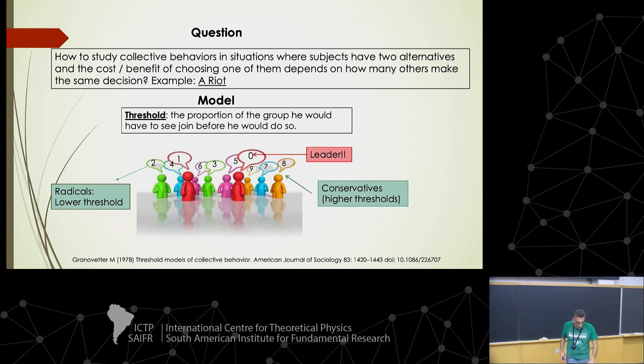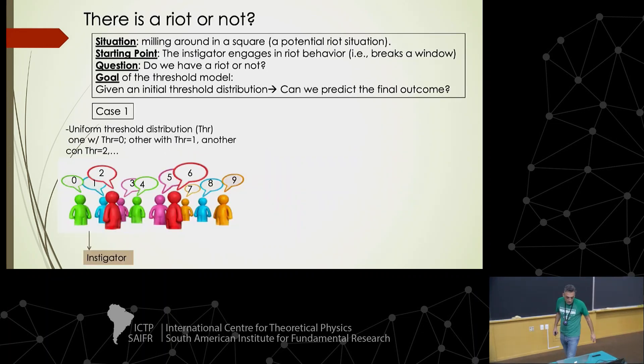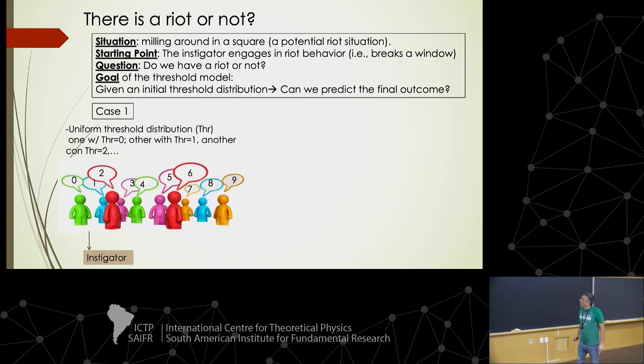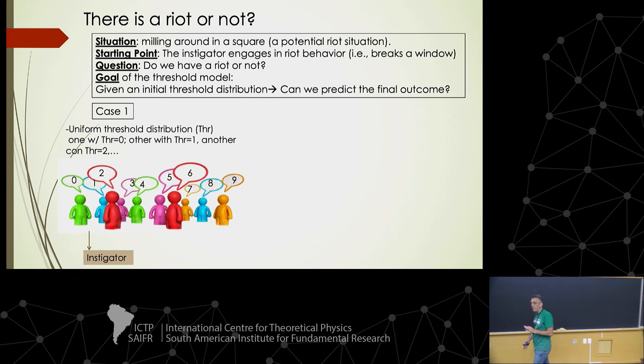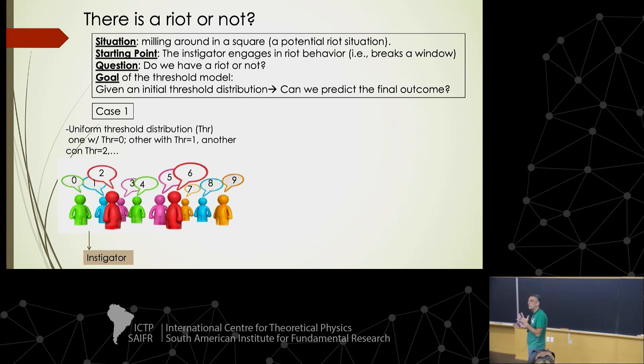A person with threshold zero is someone who will join the riot regardless of anyone else — this is the leader, just grab a stone and start the riot. A person with threshold one will join if one person starts. A person with threshold two needs two people, and so on. People with low threshold are radicals; people with higher threshold are more conservative.